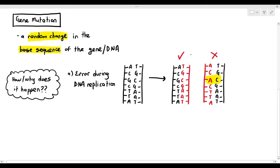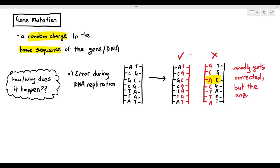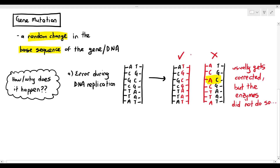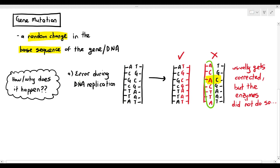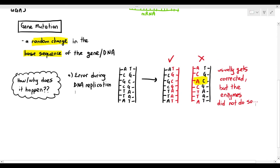Even if an error does occur, it usually gets corrected, because there are DNA repair enzymes that go through the new DNA molecule to check for mistakes and correct them. But in some cases, the enzymes miss the mistake, and a mutation has occurred. As you can see, the template sequence is ACGCTTA, but the new sequence is now ACACTTA. So the base sequence of the gene has randomly changed — that is gene mutation.